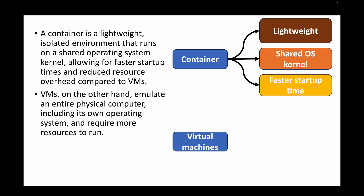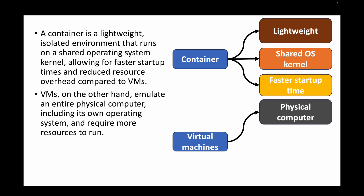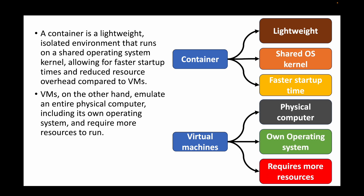VMs, on the other hand, completely emulate an entire physical computer, including having their own operating system, and require more resources to run. When you create a VM, you divide hardware like your hard disk and RAM and it has its own OS. So you have the host OS and the VM OS, whereas with containers, the host OS is shared by all containers running on that machine.